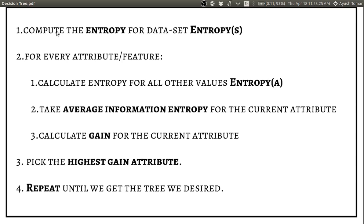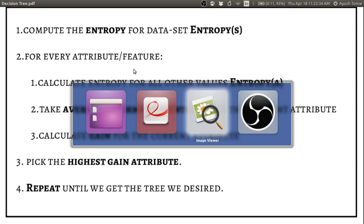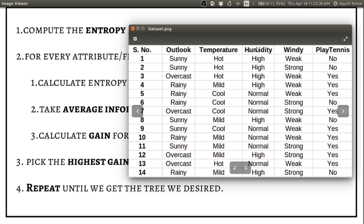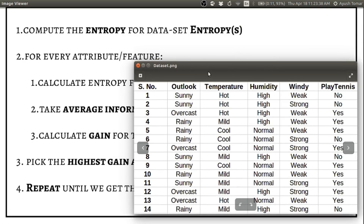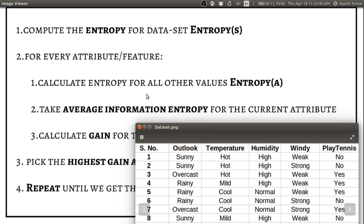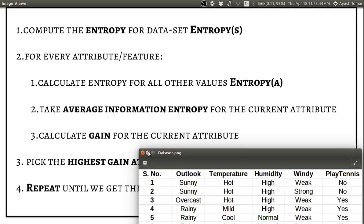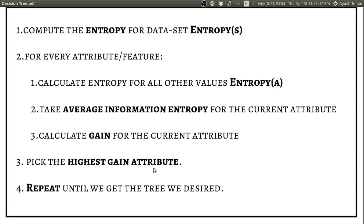The ID3 algorithm works as follows. First step: compute the entropy for the entire dataset. Next, for each and every attribute — outlook, temperature, humidity, windy — calculate the entropy, then the average information entropy, then calculate the gain, and pick the highest gain — that will be your node. We have to repeat this process until we get the full tree. We know we are done when the last node is a leaf node.